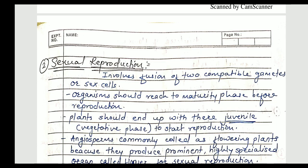Sexual reproduction is the process which involves fusion of two gametes, or fusion of two sex cells. The gonads are present in sexual reproduction — it may be a male gamete or it may be a female gamete. Both are coming together to form a new individual, which is nothing but sexual reproduction.